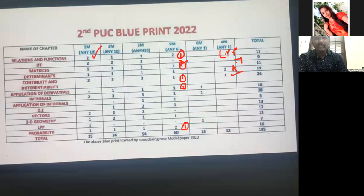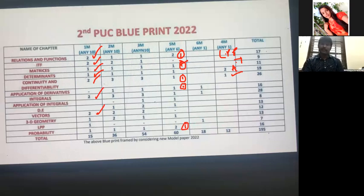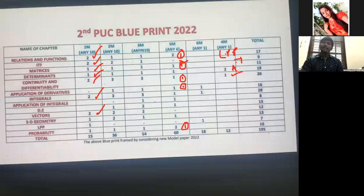In one-mark questions: Relations and Functions — two questions, choose any one. ITF — two questions, choose any one. Matrices — one very easy question, like find the value of x. Integrals — two easy questions. Vectors — two easy questions. In Matrices they may ask to define scalar matrix or identity matrix. In Vectors they may ask to define unit vector or definitions of composite. In 3D Geometry, an intercept form question — find xyz intercepts or find the equation given intercepts.